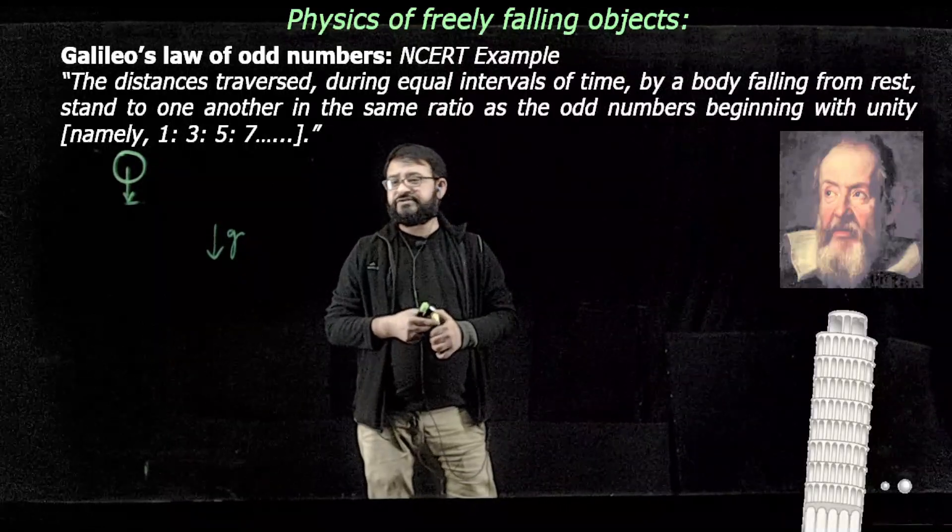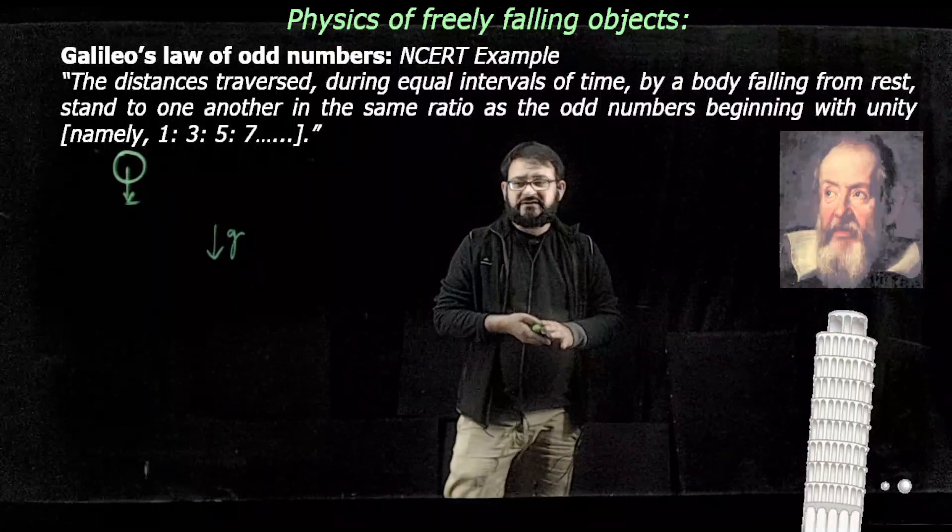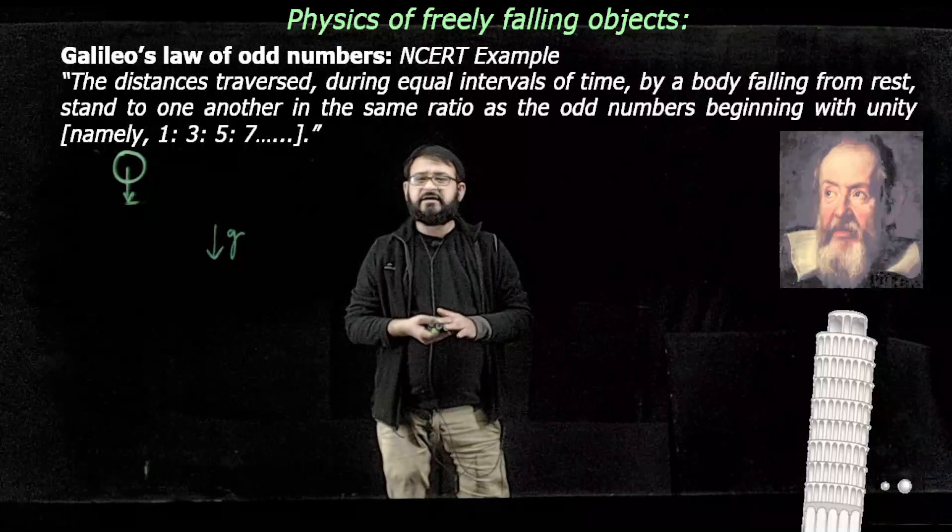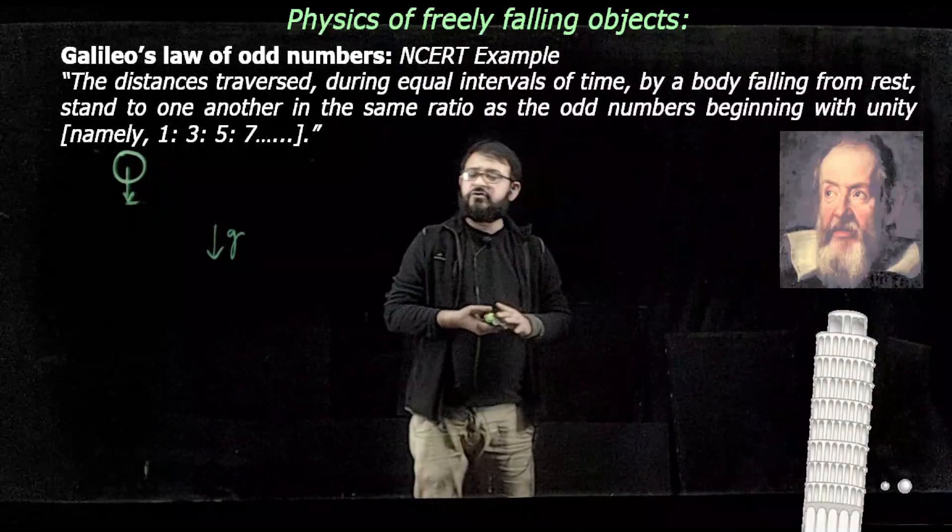So great was the prestige of Aristotle. Then came Galileo Galilei, who notoriously threw so many objects from the Tower of Pisa to get a clear understanding of freely falling objects. And his conclusion was: